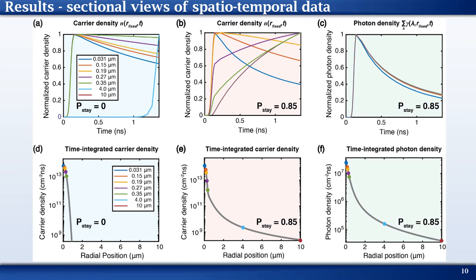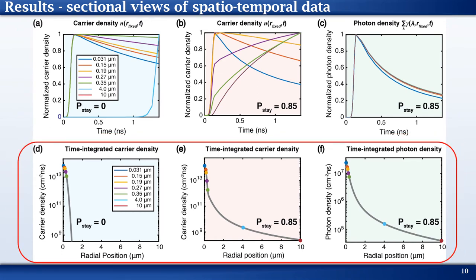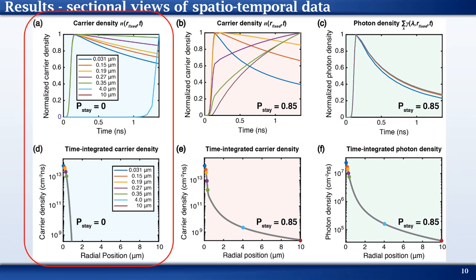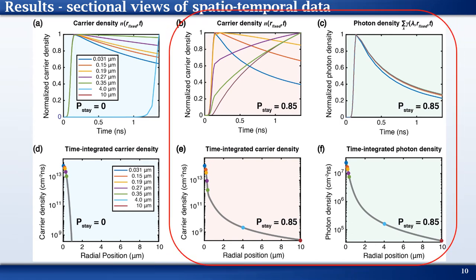Now let us analyze the data shown in the previous slide in detail. The sectional and time integrated views of the spatiotemporally distributed densities are presented here. The top three panels show normalized lifetimes for carriers and photons at various positions in space. The three figures in the bottom show time integrated radial profiles on a logarithmic y-scale. The first column corresponds to the one without photon recycling and consequently only the carriers are shown. The second and third columns represent the situation with photon recycling for charge carriers followed by photon densities.